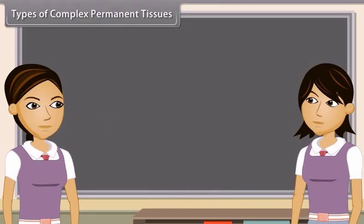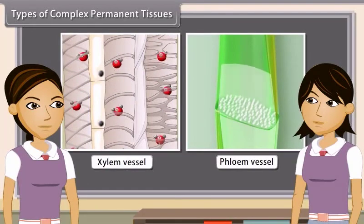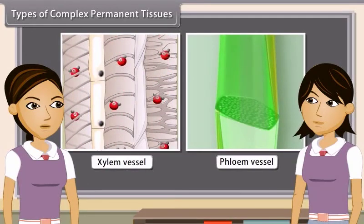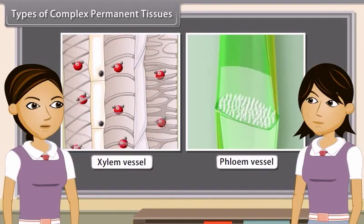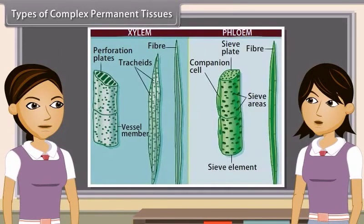Complex tissues are made of more than one type of cells. All these cells coordinate to perform a common function. On the basis of nature of cells, complex permanent tissues are of two types: xylem and phloem. The supporting and water-conducting tissue of vascular plants consisting primarily of tracheids and vessels is woody tissue. The food-conducting tissue of vascular plants consisting of sieve tubes, fibers, parenchyma and sclerides is also called bast.